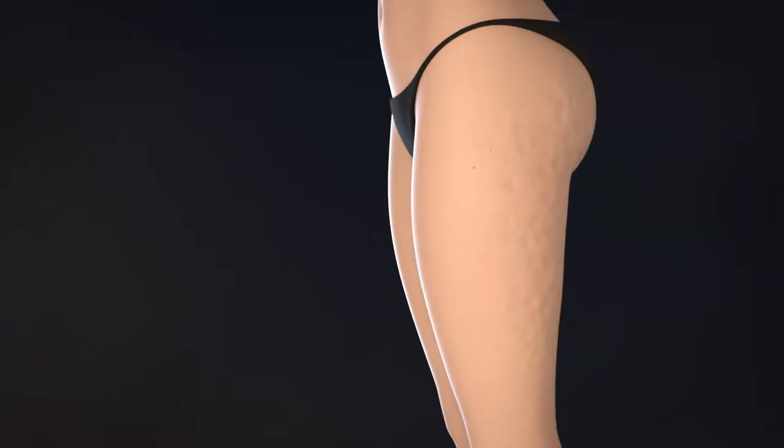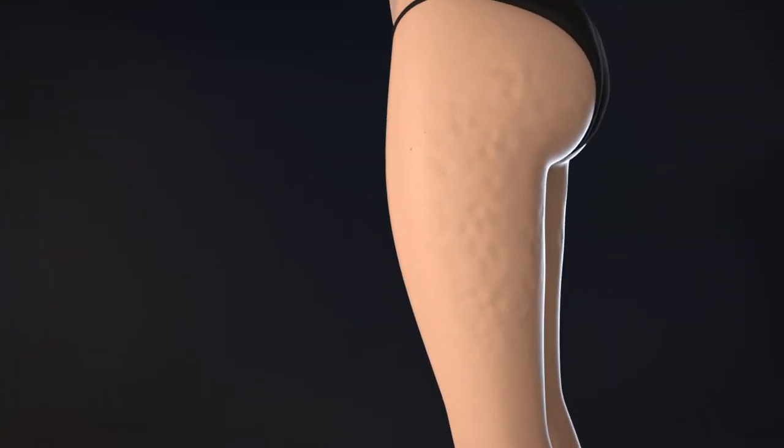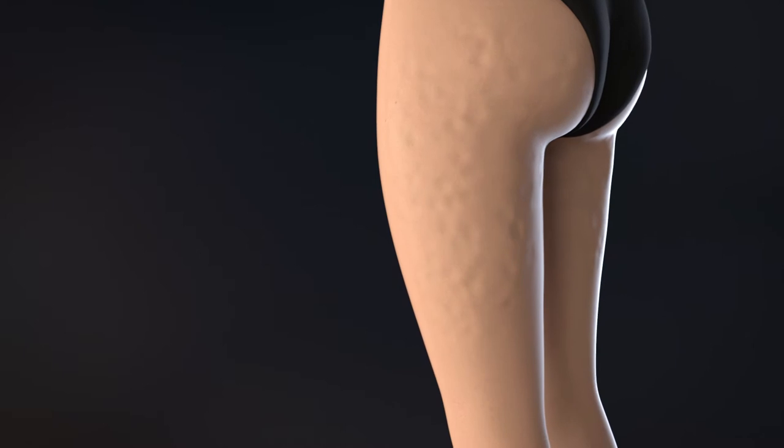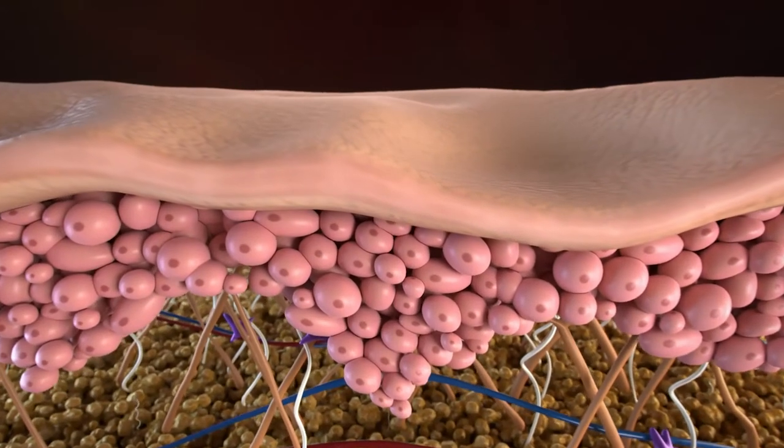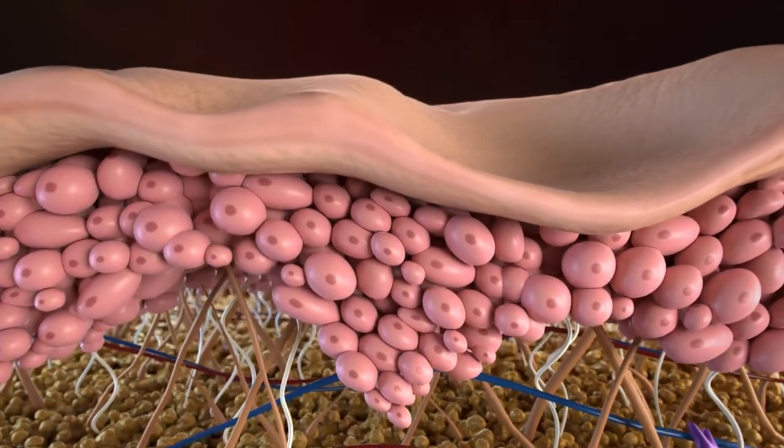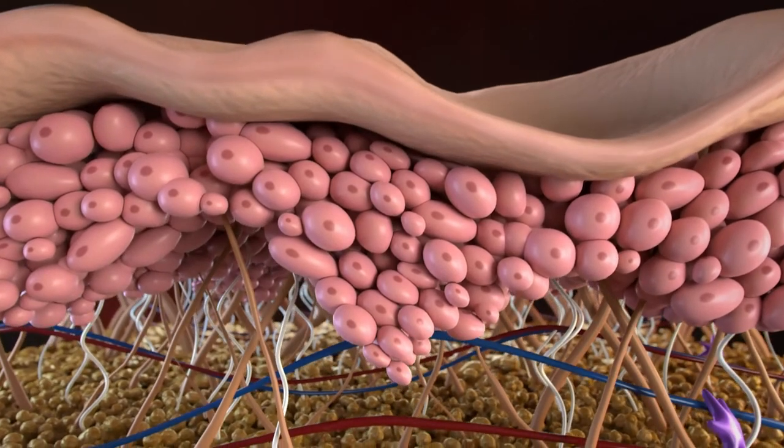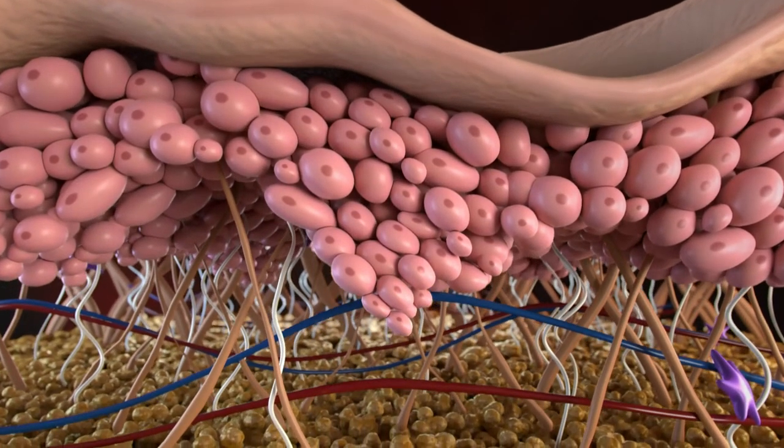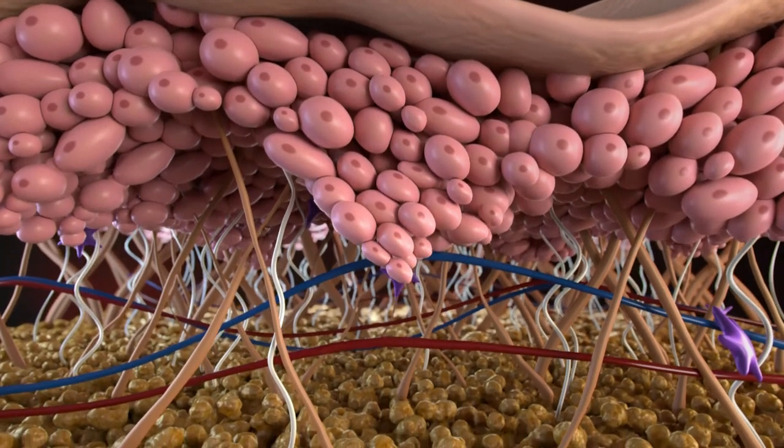Cellulite is a condition caused by inflammation that deforms the skin and causes orange peel syndrome. Skin with low density and firmness becomes weaker and more sensitive to the deformations caused by cellulite.